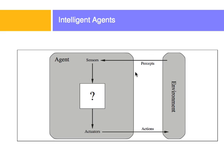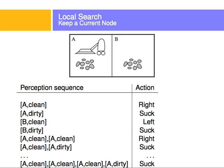An agent is basically a black box where percepts come in through sensors, then some program does whatever it needs to with the sensor data telling it how the environment is configured, and then the actuators are triggered to result in actions in the environment. For example, consider a vacuum cleaner that needs to know which room to clean — room A or B. If it senses the room is dirty it will suck; if the room is clean it will go to the other room.